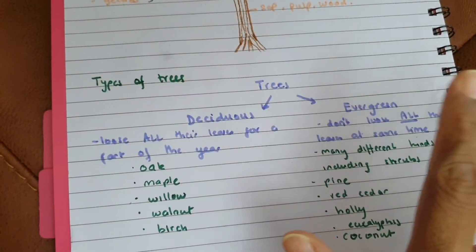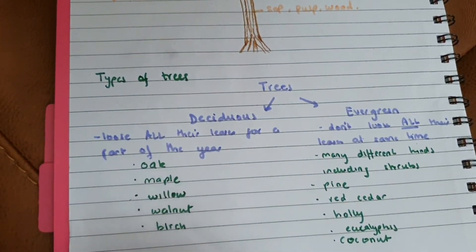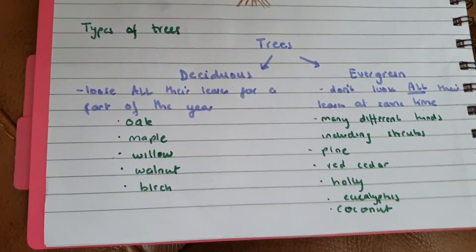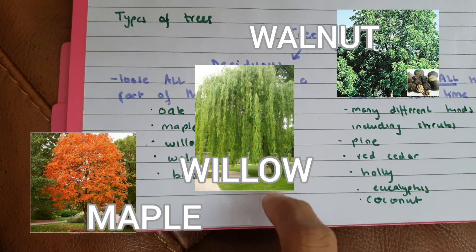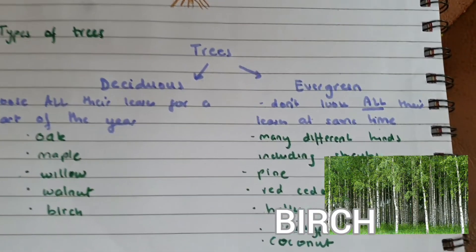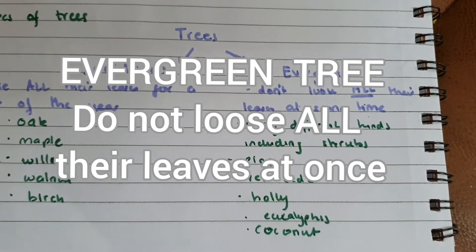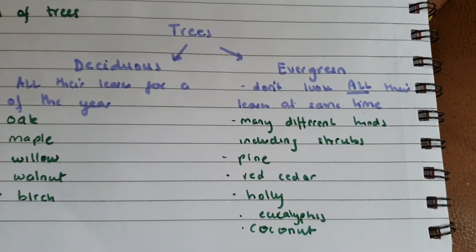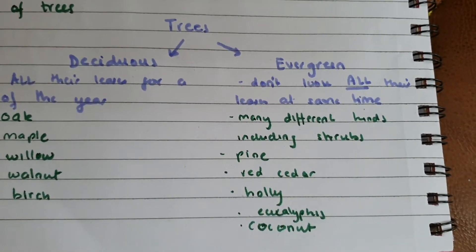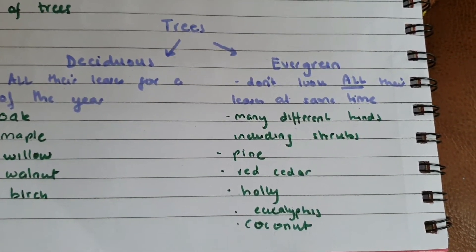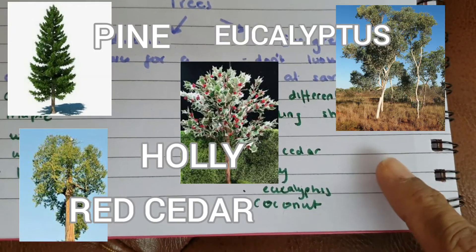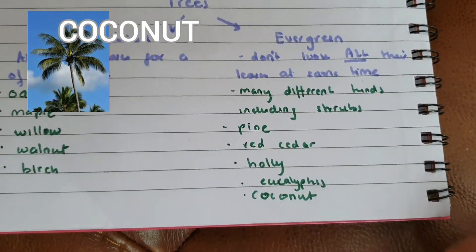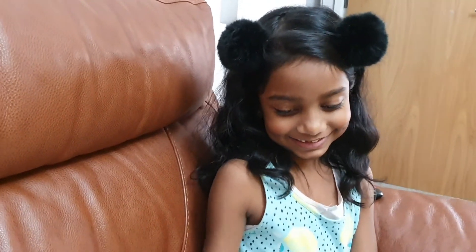Deciduous trees go bare — the tree has no leaves during autumn and winter. A few examples of deciduous trees are oaks, maples, willow, walnut, and birch. Evergreen trees don't lose all of their leaves at the same time, so they have leaves at any time of the year. Examples of evergreen trees are pine, red cedar, holly, eucalyptus, and coconut.